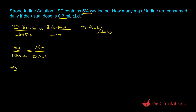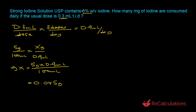We solve for x, our unknown. X equals five grams times 0.9 milliliters divided by 100 milliliters, which equals 0.045 grams. We then multiply by the conversion factor: one gram equals 1,000 milligrams. The grams cancel out, and this equals 45 milligrams.